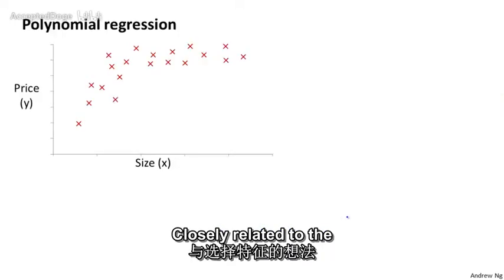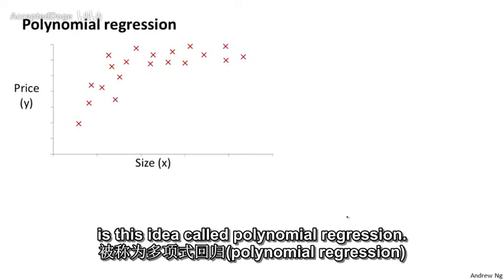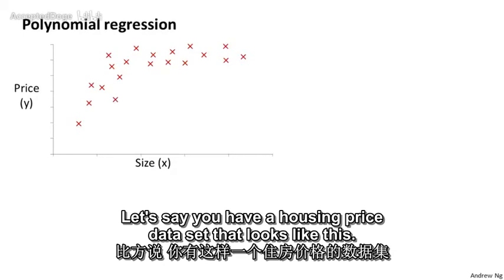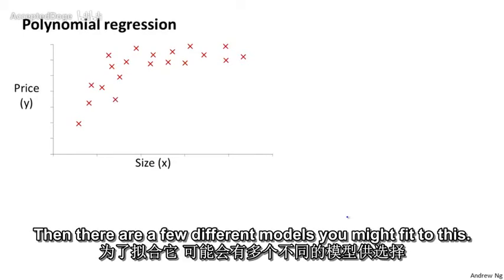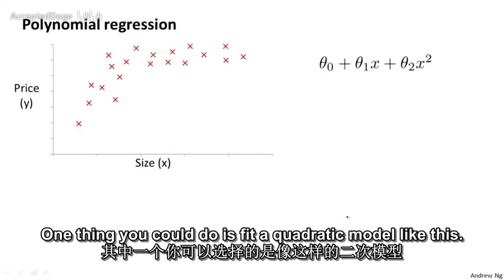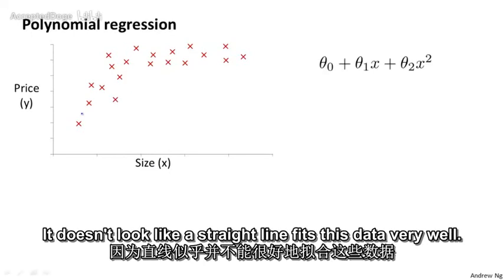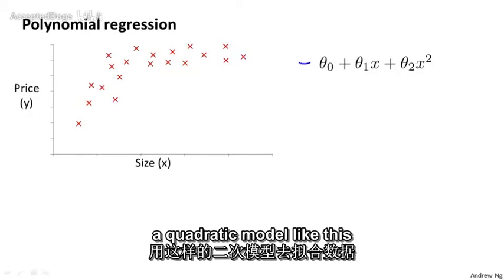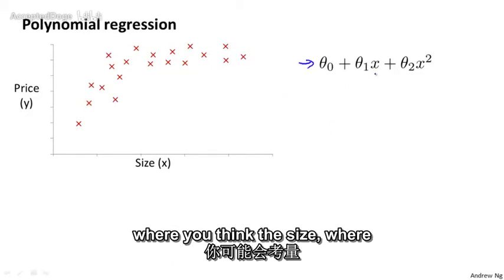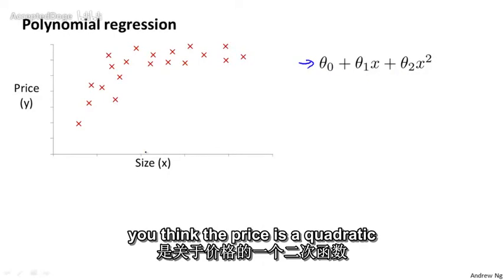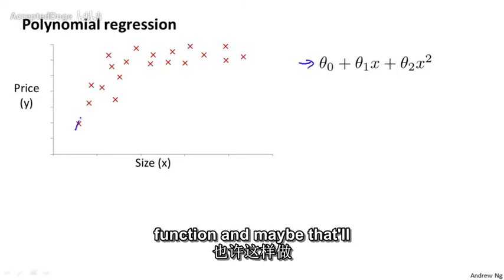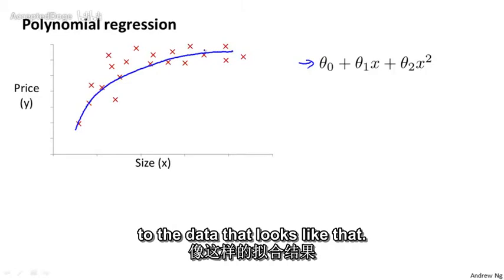Closely related to the idea of choosing your features is this idea called polynomial regression. Let's say you have a housing price data set that looks like this. Then there are a few different models you might fit to this. One thing you could do is fit a quadratic model like this. It doesn't look like a straight line fits this data very well. So maybe you want to fit a quadratic model like this, where you think the size, where you think the price is a quadratic function. And maybe that will give you a fit to the data that looks like that.